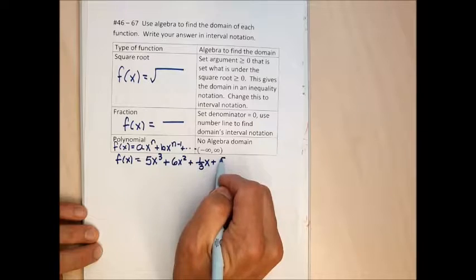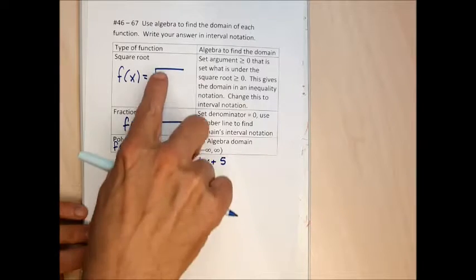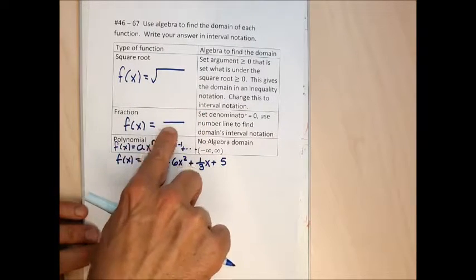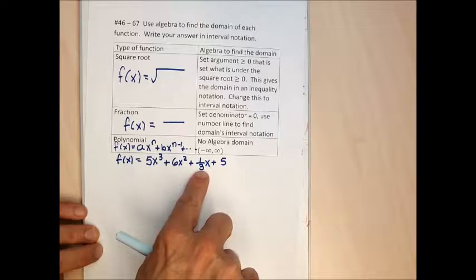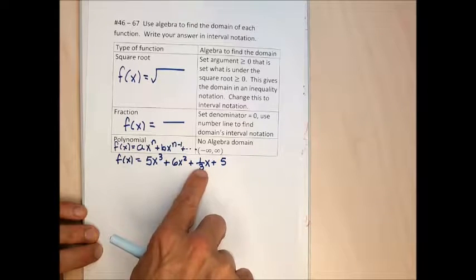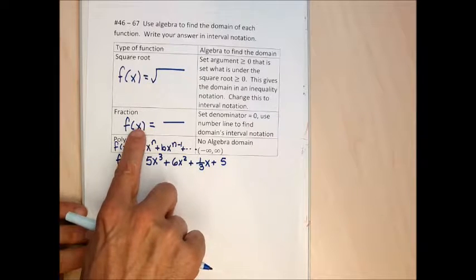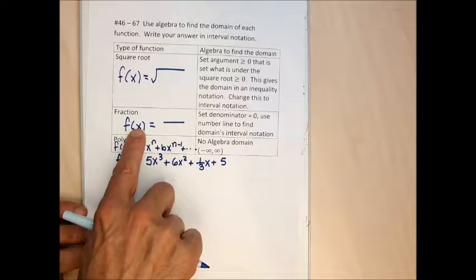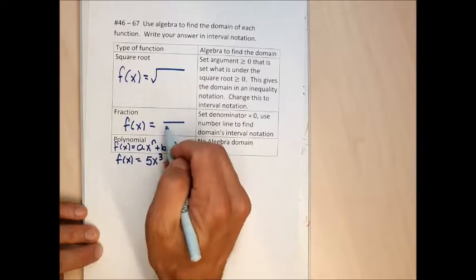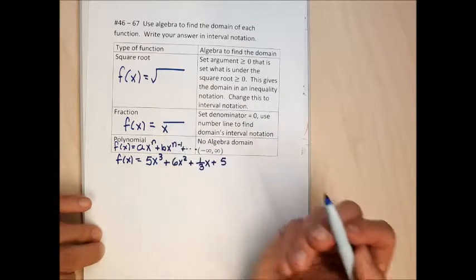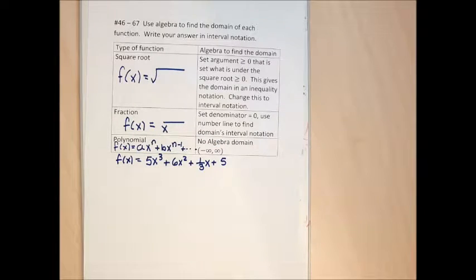This would be an example of a polynomial. It doesn't have a square root symbol. It does have a fraction, but that doesn't disqualify it from being a polynomial. Polynomials can have fractions as long as there's no x in the denominator. When finding the domain of a fraction function, there has to be an x or something involving x in the denominator. Each type of problem has a different strategy to find the domain.